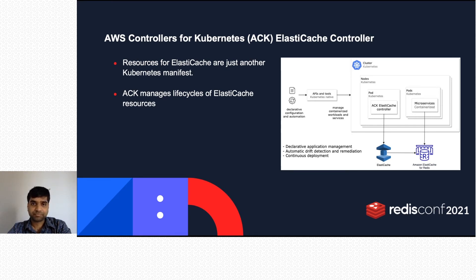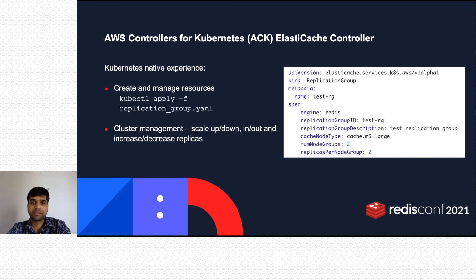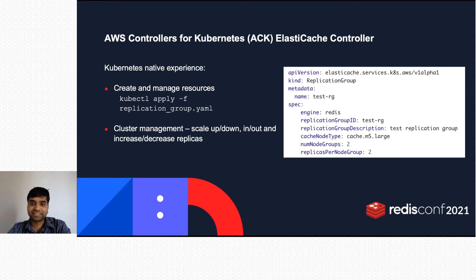With ACK, ElastiCache lifecycle operations for create, update, and delete can be managed within Kubernetes. One can have a native Kubernetes experience while creating ElastiCache resources. As you can see in this slide, there is an example of how to create an ElastiCache cluster. You need to define a Kubernetes manifest that includes details like replication group ID, the number of shards needed, and the replicas needed. Once this YAML file is defined, a Kubernetes user can apply it using kubectl or any Kubernetes client.